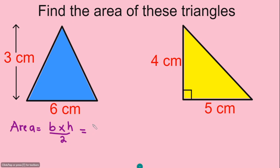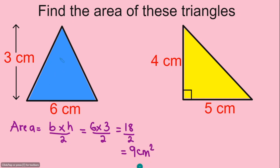In this case the base is 6 centimeters and the height is 3 centimeters, divided by 2. Six times 3 gives you 18, and 18 divided by 2 gives you 9 centimeters squared. So the space inside this blue triangle is 9 centimeters squared. That was pretty easy!